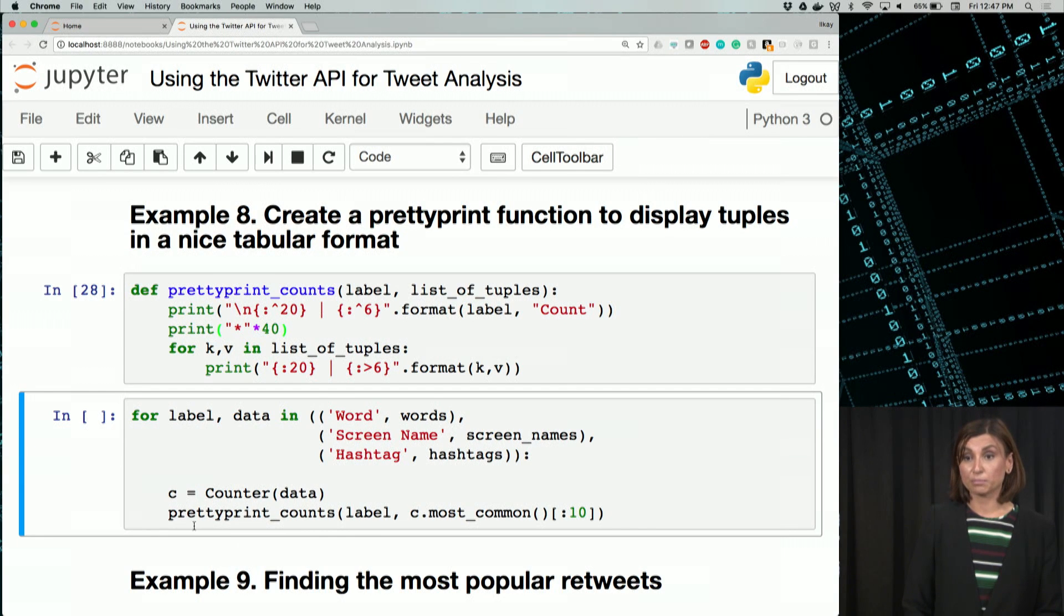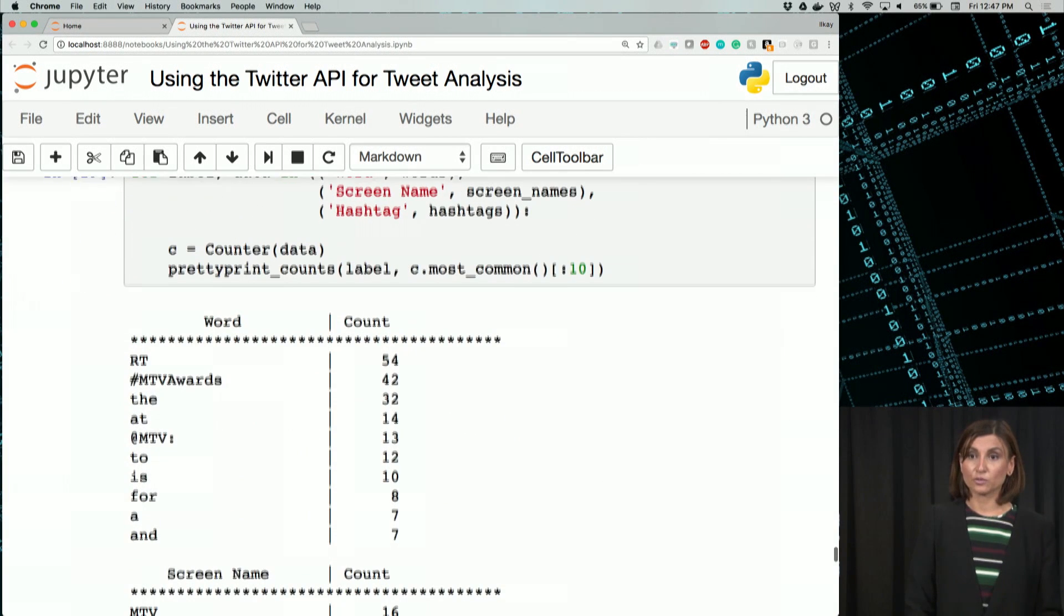So we can now use this pretty printer function for each label and data in word and words. So those are our K and V. And we are going through the data in our counter. We are loading the data into a counter. And we are giving this counter and the labels to our pretty print function. Let's see what it outputs.